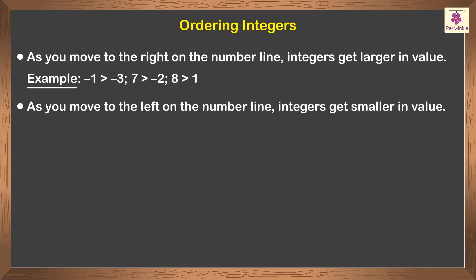As you move to the left on the number line, integers get smaller in value. For example, negative 3 is lesser than 4, negative 9 is lesser than 0, negative 5 is lesser than negative 2.